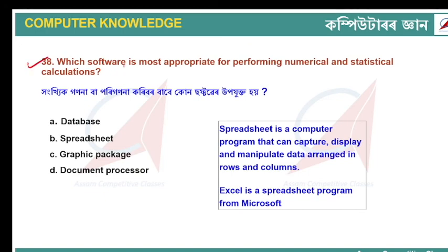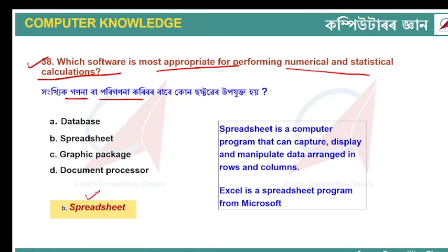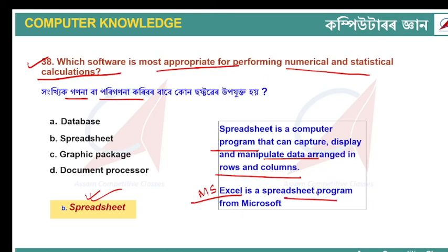Which software is most appropriate for performing numerical and statistical calculations? The answer is spreadsheet. A spreadsheet is a computer program that allows you to capture, manipulate, and arrange data in rows and columns. MS Excel, developed by Microsoft, is also a spreadsheet program used for numerical and statistical calculations.